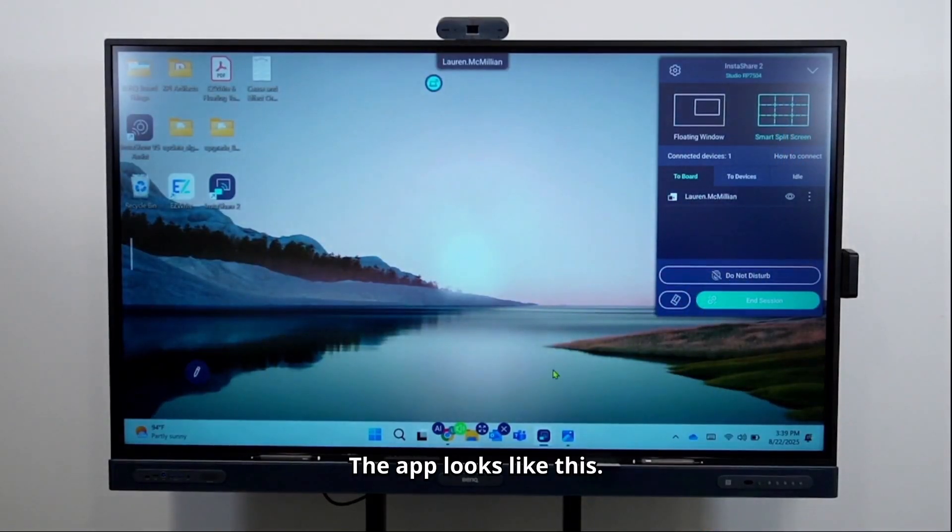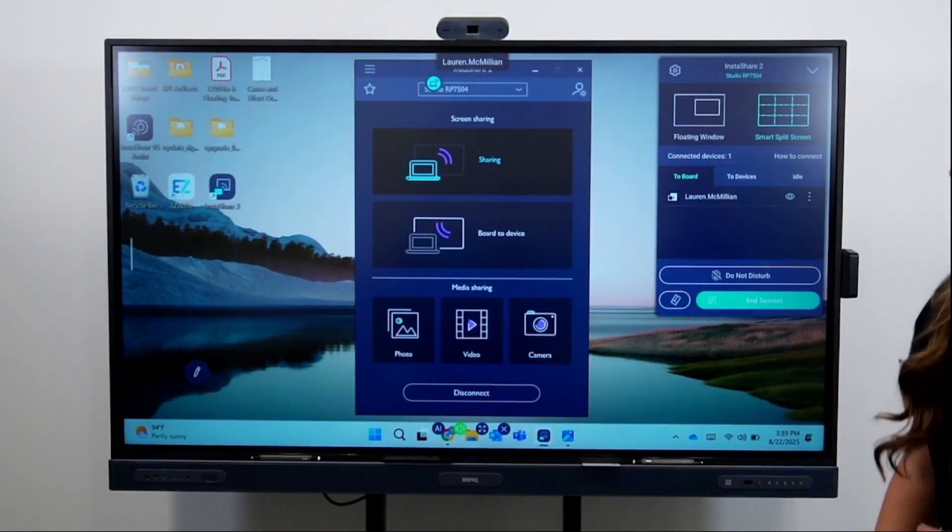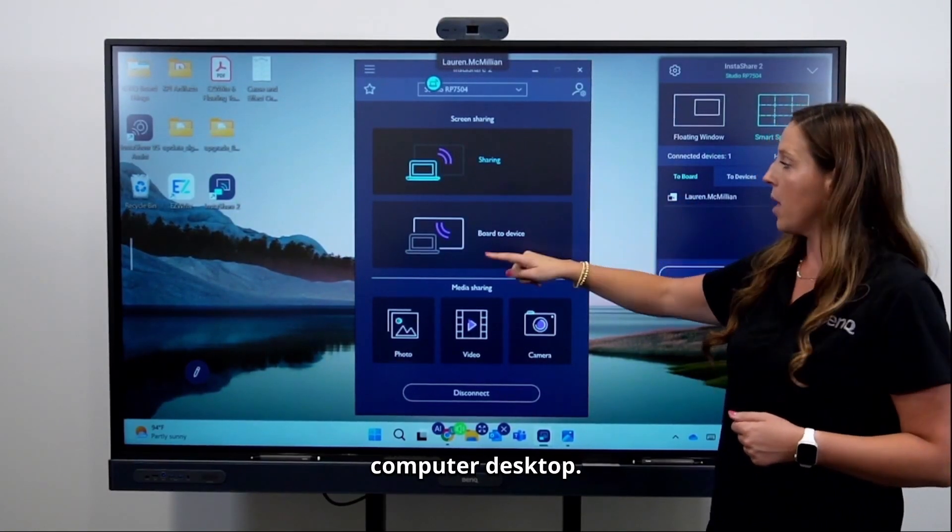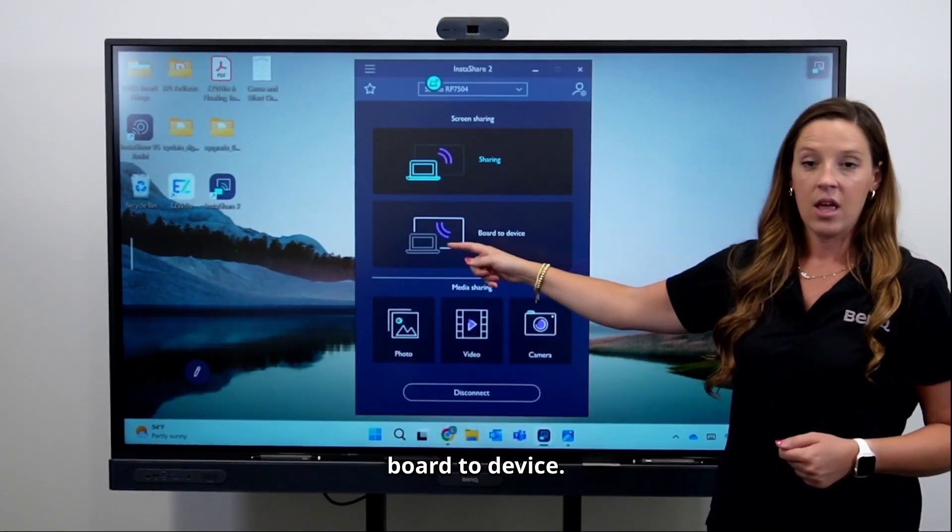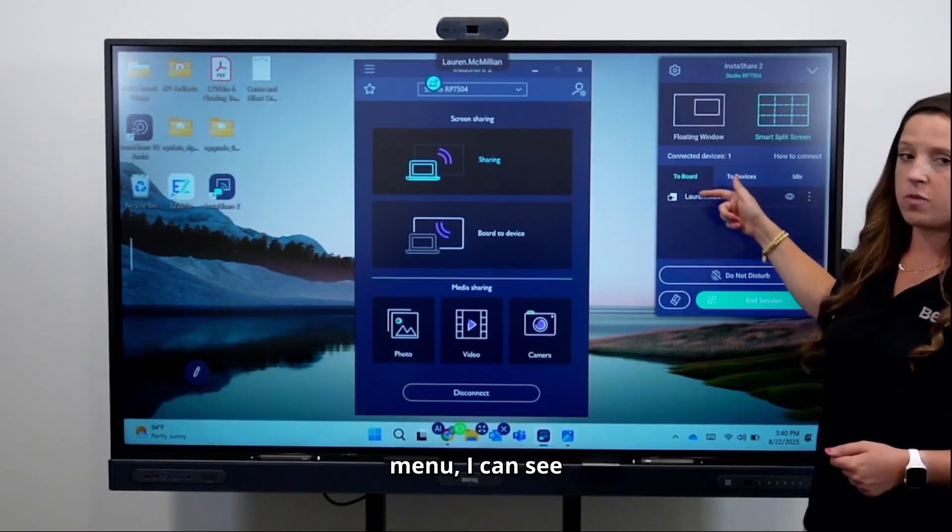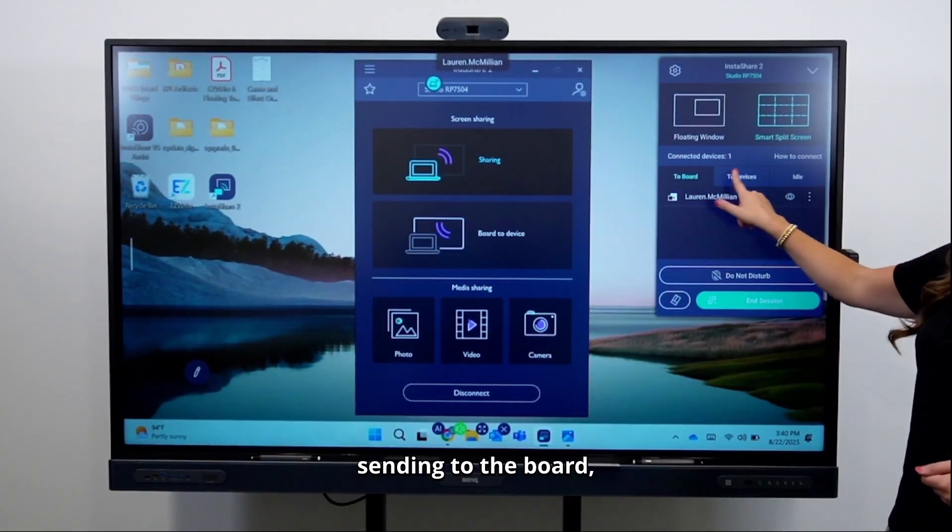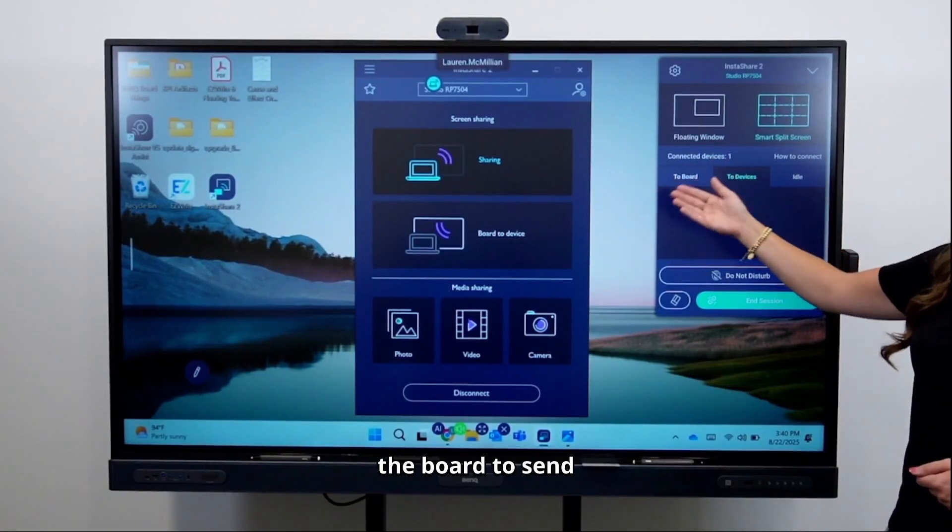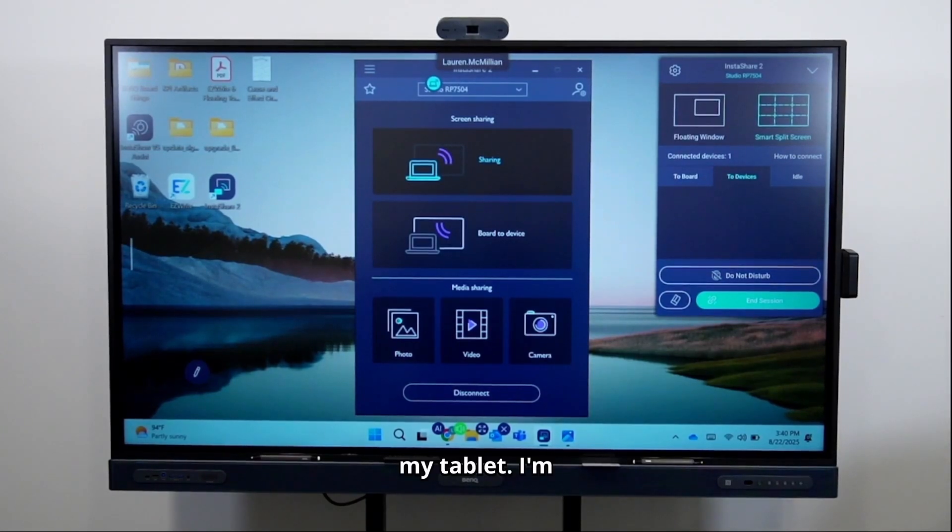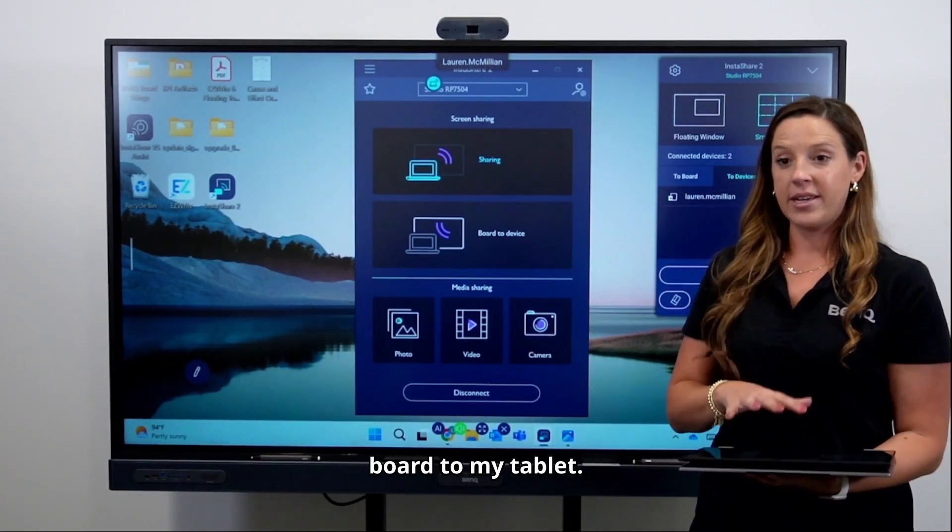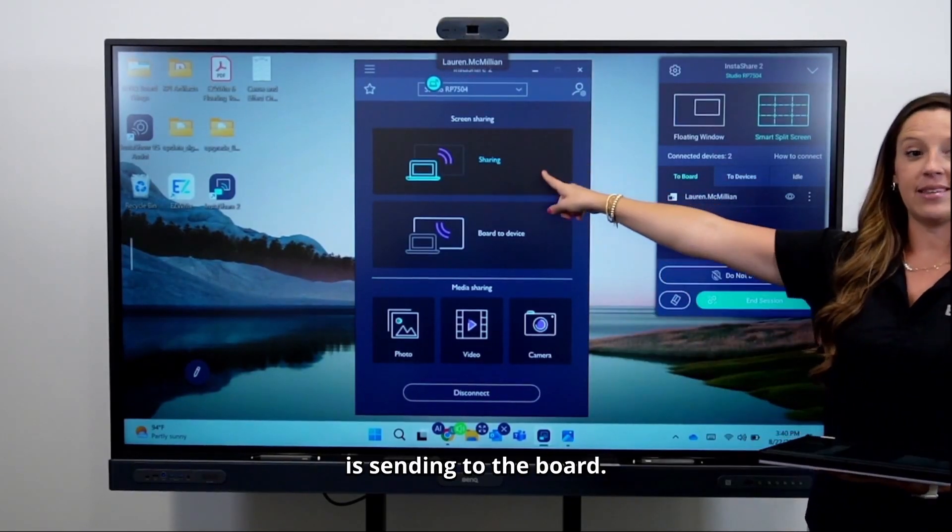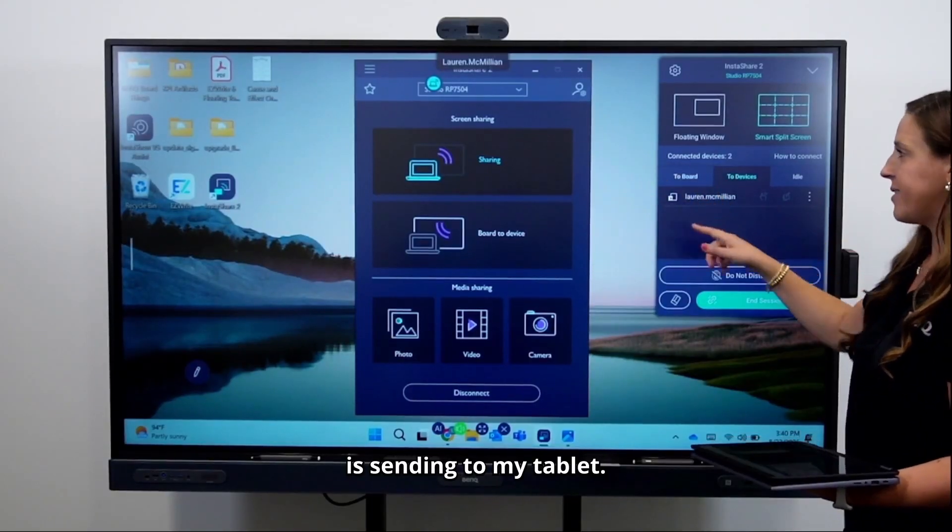You can now see that I'm currently sharing my computer screen. My other option is board to device. I can tap board to device and now in my host menu, I can see one device is sending to the board, but I can also tell the board to send to a device as well. So I'm going to connect my tablet. I'm now sending the board to my tablet. In my host control, I can see that my laptop is sending to the board and the board is sending to my tablet.